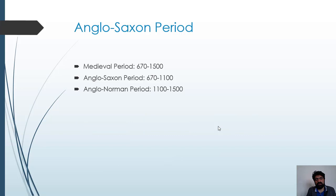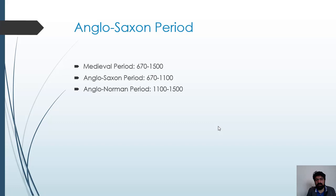The Anglo-Saxon period is a part of the medieval period in the history of the English race or nation. The medieval period ranges from 670 AD to 1500 AD. It has been further divided into two periods. The first is the Anglo-Saxon period, which ranges from 670 AD to 1066, or roughly 1180. After 1180, the period is termed the Anglo-Norman period, ranging from 1100 to 1500. From 1500 onwards, the period is called the Renaissance period.